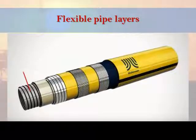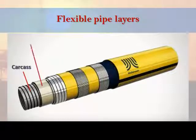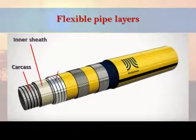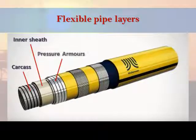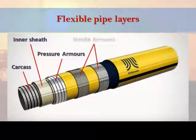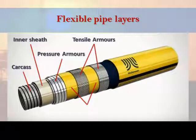A metallic layer called the carcass. A polymeric layer called the internal pressure sheath or inner sheath. Two metallic layers called the interlock and backup pressure armors. Two metallic layers called the inner and outer tensile armors. Polymeric layers called the anti-wear tapes, located between metallic layers. An insulation layer, and an outer sheath layer.